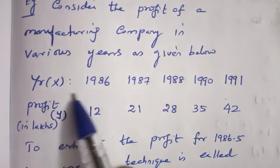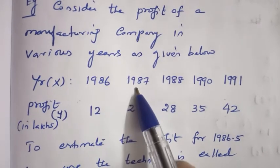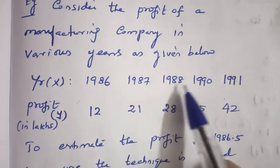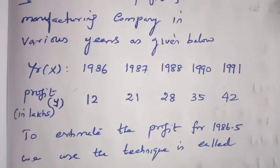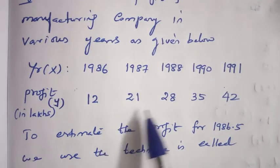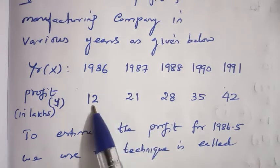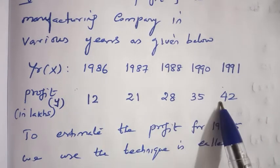Year can be taken in next entries: 1986, 1987, 88, 90, 91. And the profit entries are 12, 21, 28, 35 and 42.